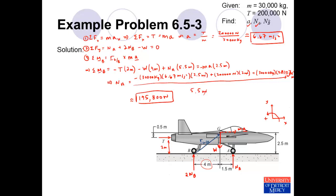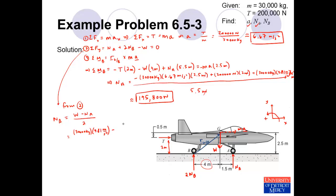That gives us another quantity we were asked to find. Finally, to find N_B, we return to equation two — the sum of forces in the Y direction. Solving for N_B: weight minus N_A, divided by 2. That is 30,000 kg times 9.81 m/s² minus 195,800 N, divided by 2, which gives approximately 49,250 newtons at each of the rear wheels.